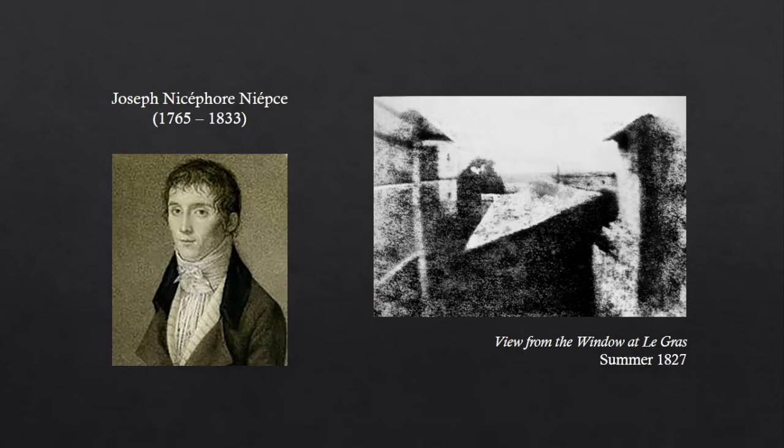Those of you who have printed your own black and white photos in a darkroom might remember that you can't turn on the light to view your printed image until it's been soaked in a chemical known as fixer for a few minutes. If you do, the image will turn black as soon as the light hits it. Niépce made the first fixed photograph in 1827. "The View from the Window at Le Gras" showed the courtyard of his house and is considered to be the very first photograph.